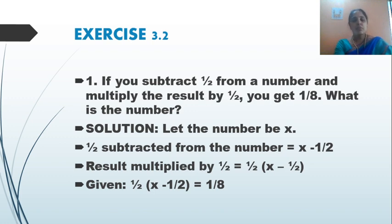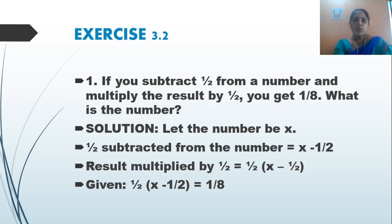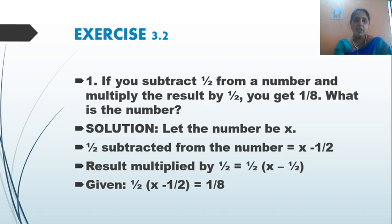The next step: half subtracted from the given number is x minus 1/2. Then applying the given condition, the result is multiplied by half, so I am going to multiply (x minus 1/2) by 1/2. This value — half multiplied by (x minus 1/2) — will be equal to 1/8, which is already given to us. So I have equated it.